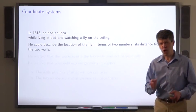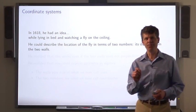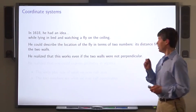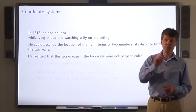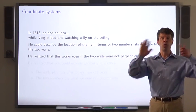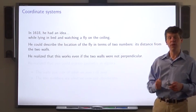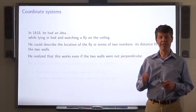He noticed that he could describe the location of the fly by two numbers. That is, the distance of the fly from two walls, two walls making a corner. And he realized that this works even when the walls were not necessarily perpendicular.